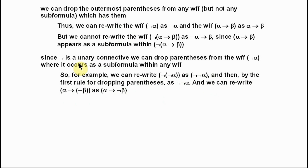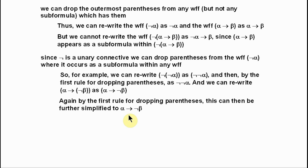Once we apply the second rule to drop inner parentheses around a negation, it's then by the first rule — for dropping the outermost parentheses — that the expression can be written simply as negation, negation, alpha. We can also rewrite alpha arrow, open paren, negation beta, close paren, as alpha arrow negation beta, by the second rule. Then by the first rule, we could drop the outermost parentheses to simplify even further. So this wff is the same as that wff, formed from it simply by following these two rules for omitting parentheses.